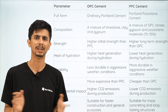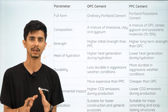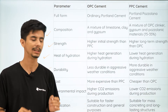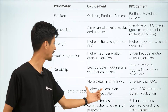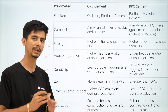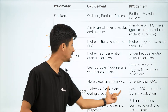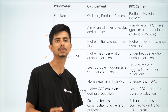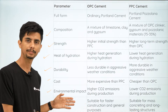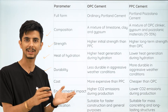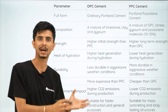Now let's look at environmental impact and carbon footprint. OPC cement produces higher CO2 emissions during the manufacturing process. If you want the total carbon footprint of your building to be low, then PPC would be the better choice.